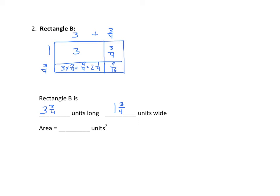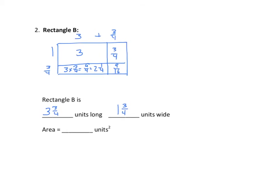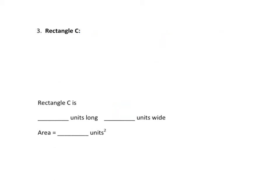So now we have 3 plus 3 fourths, plus 2 and 1 fourths, plus 9 sixteenths. I'll find the sum of the whole numbers first, 5 plus 3 fourths, plus 1 fourths, plus 9 sixteenths. And 3 fourths plus 1 fourths is another whole. So we have 5 plus 1 is 6 and 9 sixteenths. We'll fill in the area, 6 and 9 sixteenths. Let's do another example.